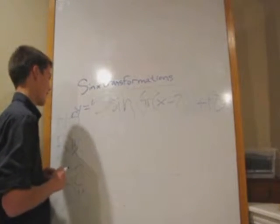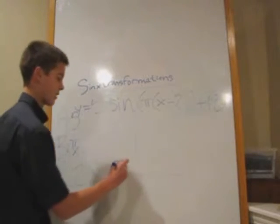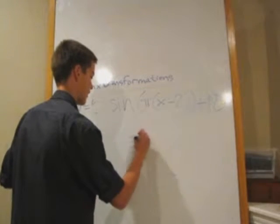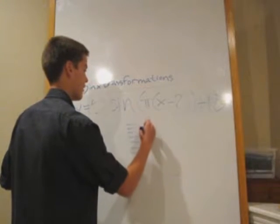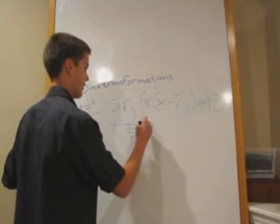So we'll start with the vertical shift, which is d, which is up 10. So 1, 2, 3, 4, 5, 6, 7, 8, 9, 10. And that will be our median. So we'll draw a little dotted line there.